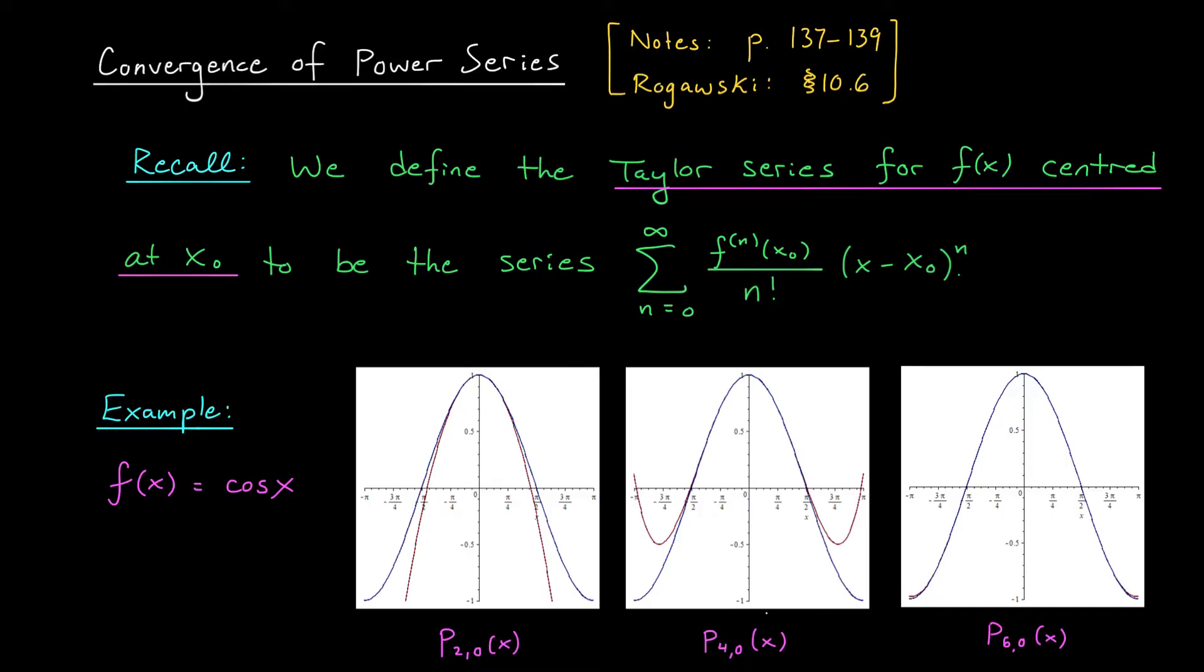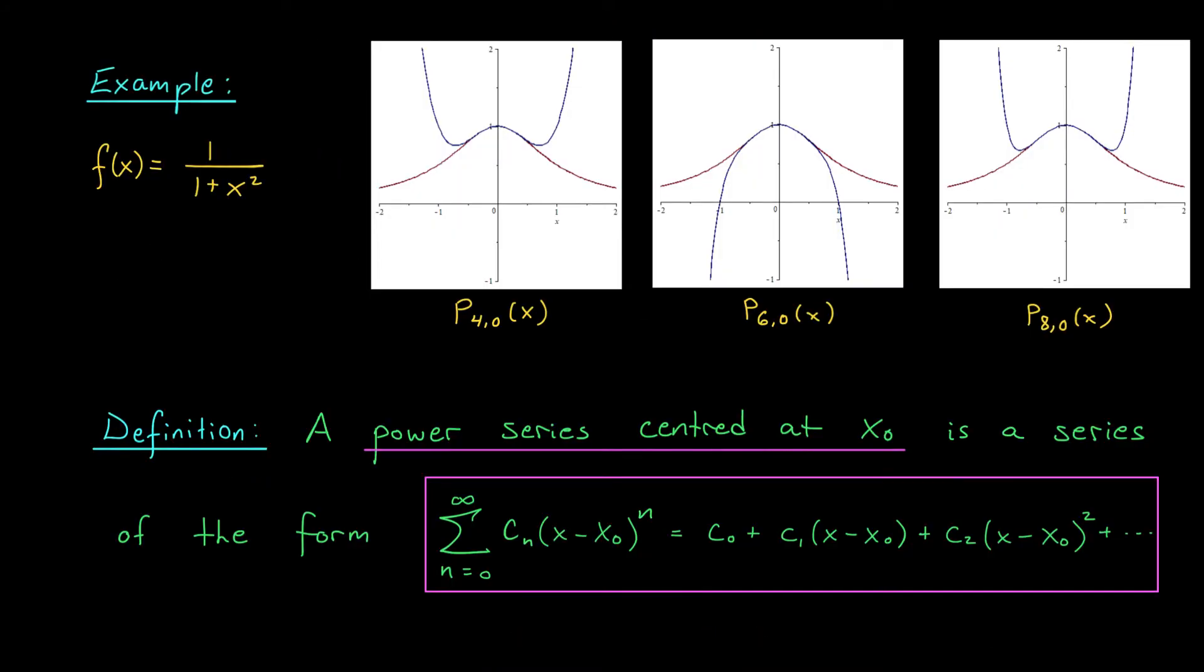This however, was not the case for some other nice functions. For an example where things don't work out so nicely, consider the function f of x equals 1 over 1 plus x squared. I've graphed that function here in red, and some of its Maclaurin polynomials are shown in blue. Notice that the approximation is actually pretty good for x values between minus 1 and 1. When we increase the degree, the approximation at these points gets better and better. But for points bigger than 1 or less than minus 1, the approximation actually gets worse.